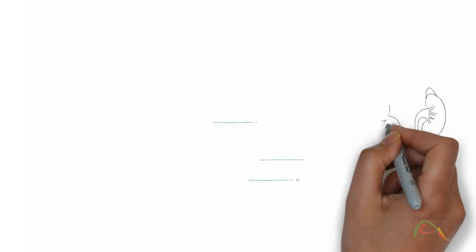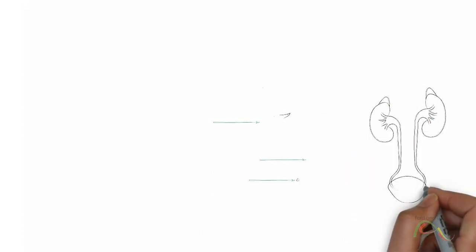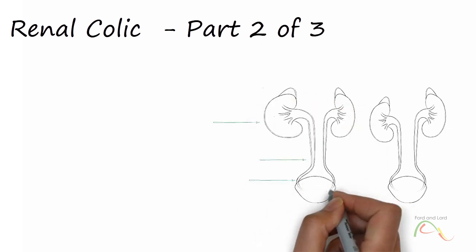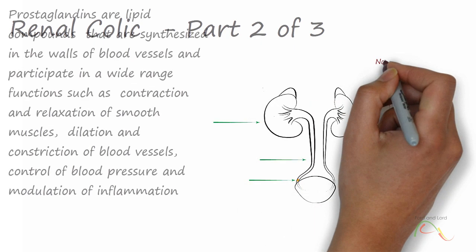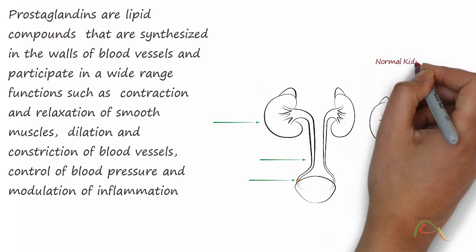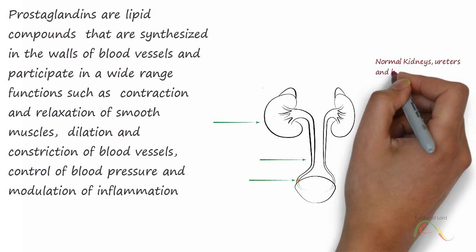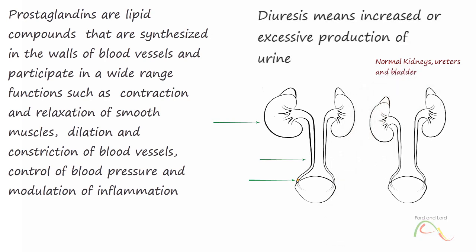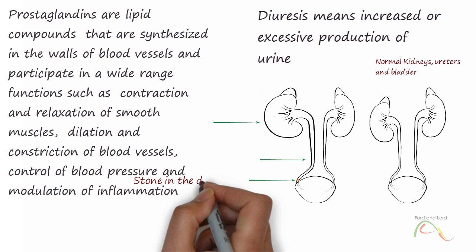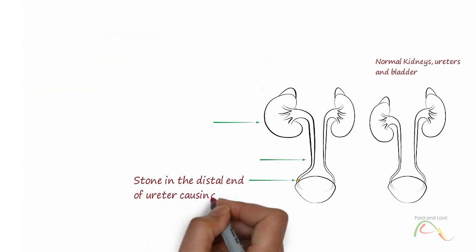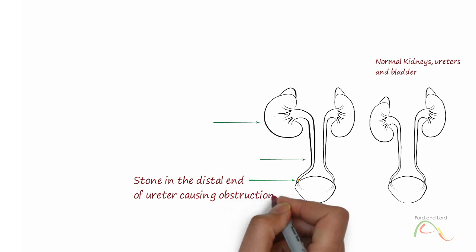Renal colic occurs when a stone obstructs an area of the ureter, causing pressure to build up in the urinary tract wall. This stimulates the production of prostaglandins, which dilate the ureteric lumen to help pass the stone and increase pressure within the kidney, leading to diuresis. The prostaglandins also cause ureteric smooth muscle spasms to facilitate stone passage, which is the cause of excruciating pain.